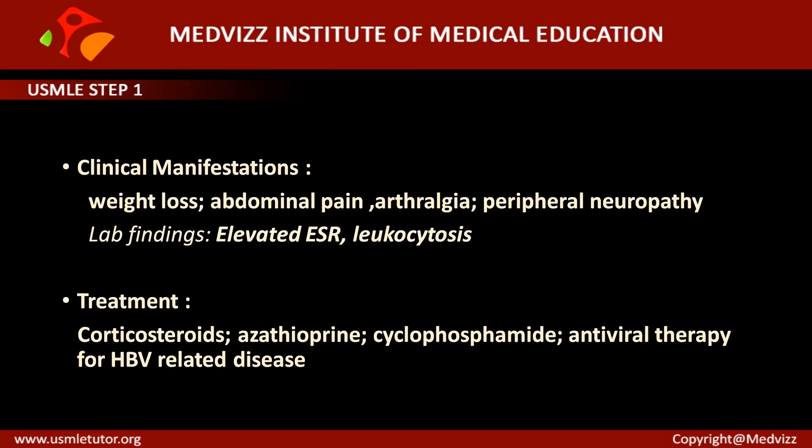Regarding clinical manifestations, due to severe inflammation and elevated ESR, fever is a common finding, though not the predominant one. The important findings include weight loss, generalized weakness, malaise, and abdominal pain — often associated with nausea and vomiting. Arthralgia is another very important and most common finding. Renal failure occurs due to involvement of the renal arteries and their branching points.